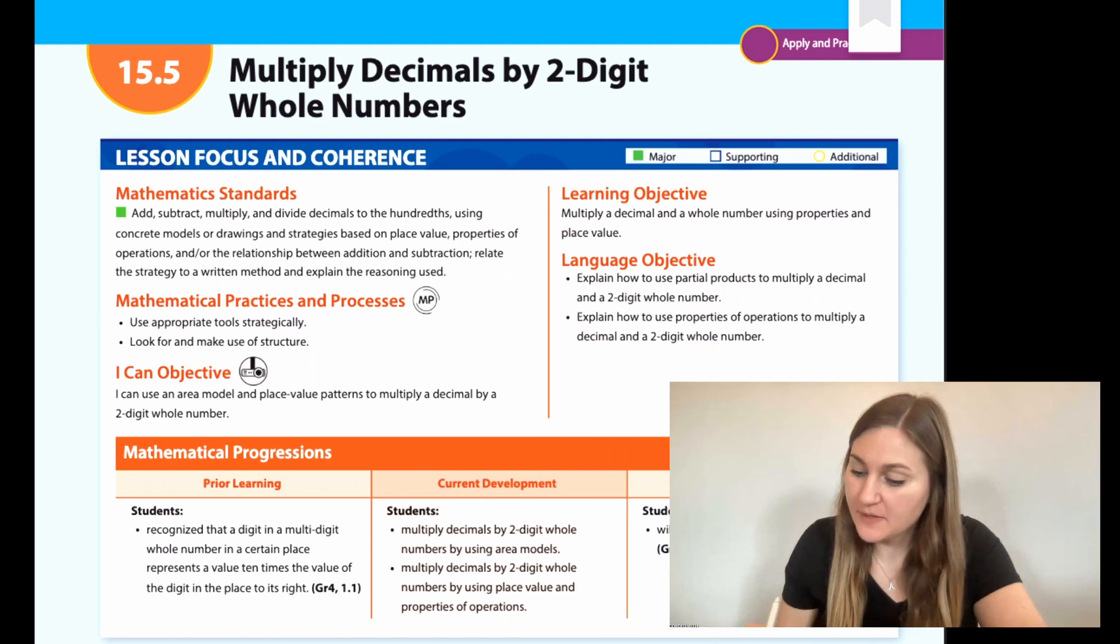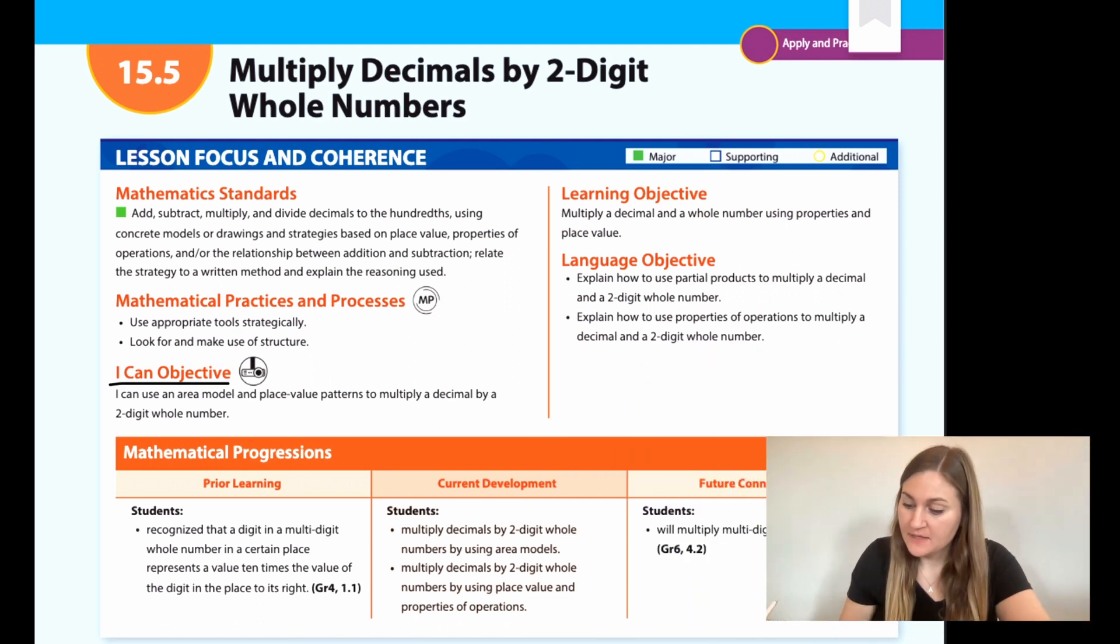Hi, I'm Natalie Rhodes and this is Into Maths 5th grade module 15 lesson 5. I'm going to start off by going over the I can objective. It says I can use an area model and a place value pattern to multiply a decimal by a two-digit whole number. The learning objective is to multiply a decimal and a whole number using properties and place value. The prior learning is that students recognize that a digit in a multi-digit whole number in a certain place represents a value 10 times the value of the digit in the place to its right.